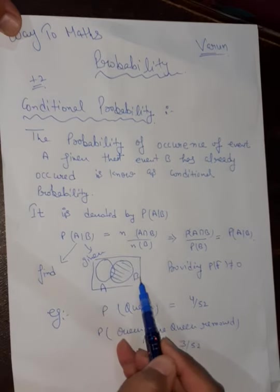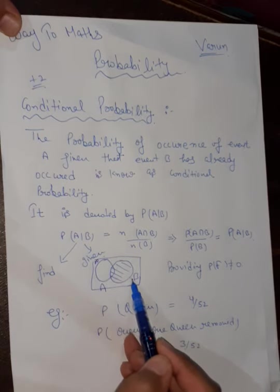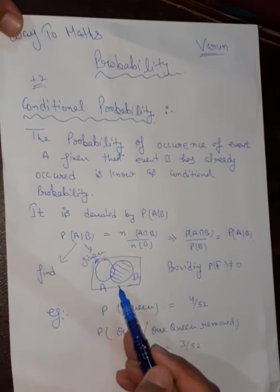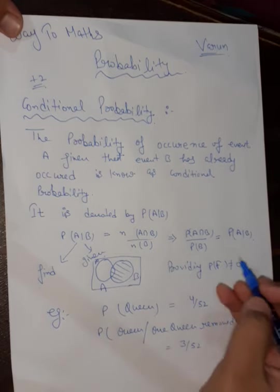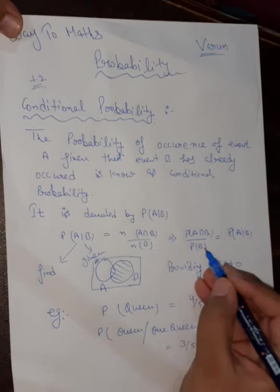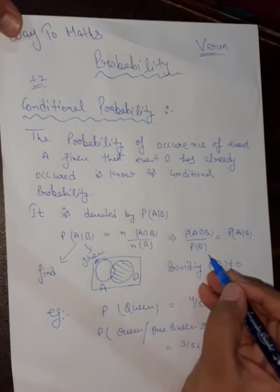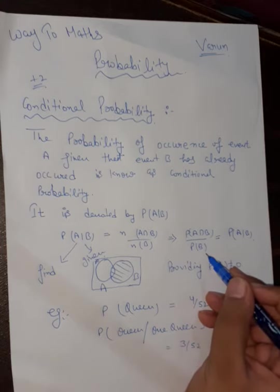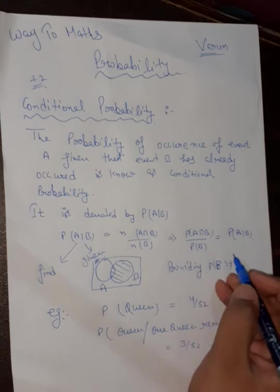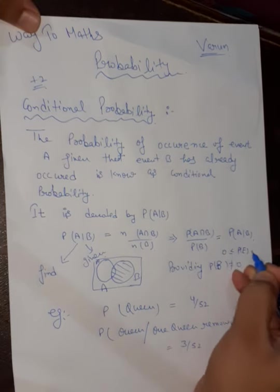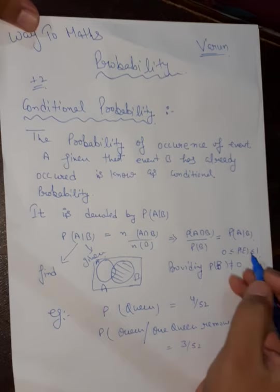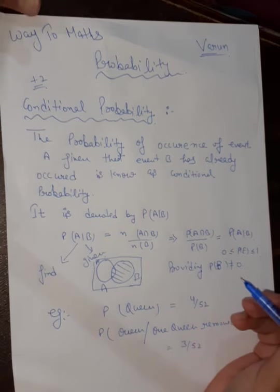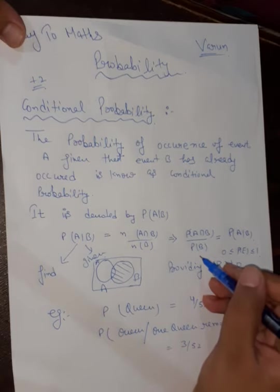The diagrammatic notation: we have the whole sample space S as a box. Inside it, set A and set B are circles, and A given B refers to the intersection region. One important condition: the probability of B must not be equal to zero. If it were zero, the result would be infinity, and we know that probability must always be between 0 and 1.